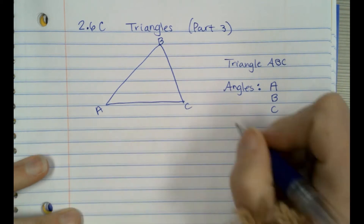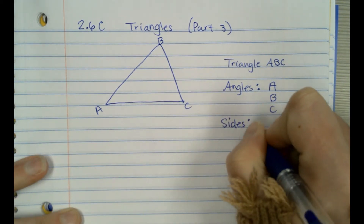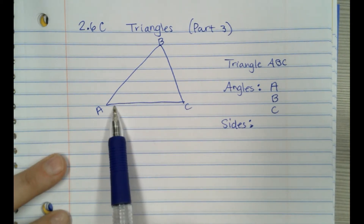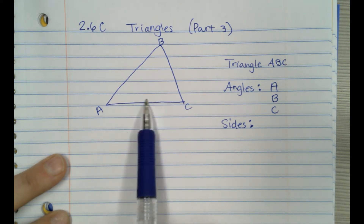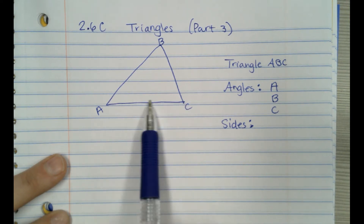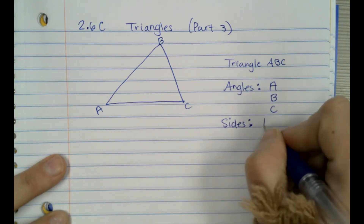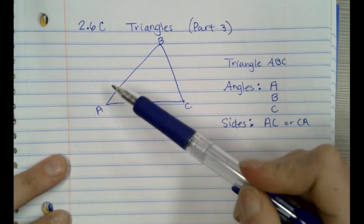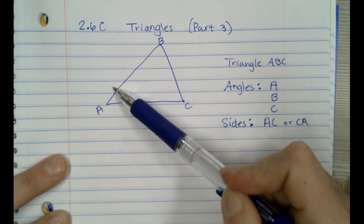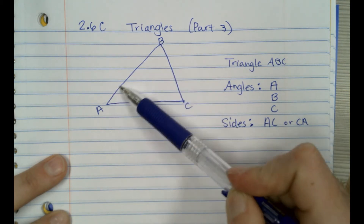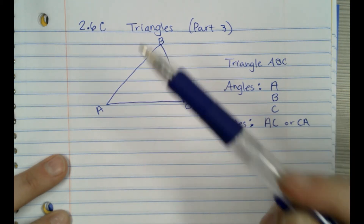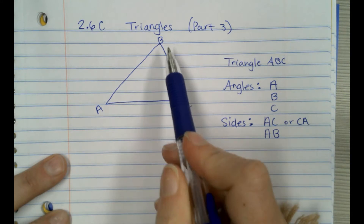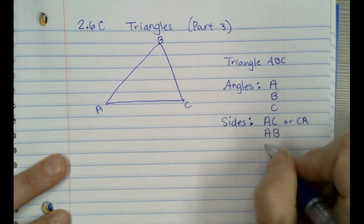The sides is what seems to be throwing some of my kids off. For a side, you need two letters. So this side right here starts and ends with A and C, so we would call it side AC, or you could call it CA. This side right here starts and ends at A and B, so we would say this side is side AB, or you could do BA. And then the last side, from B to C, we would call that side BC.